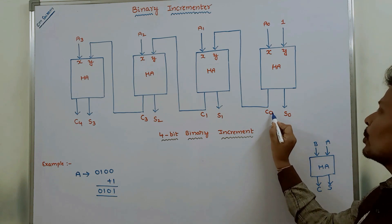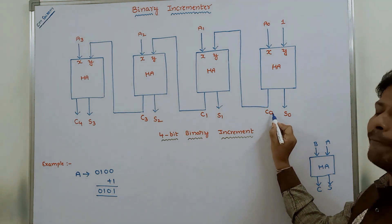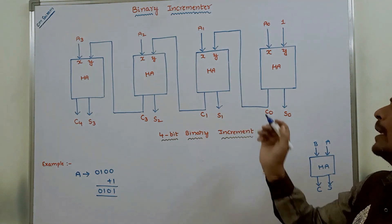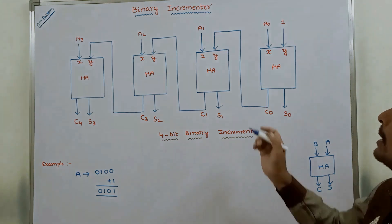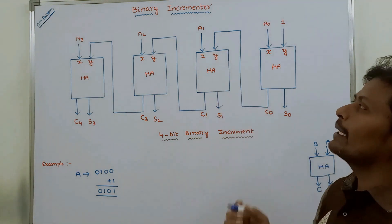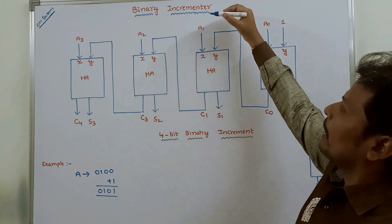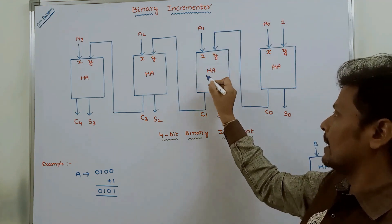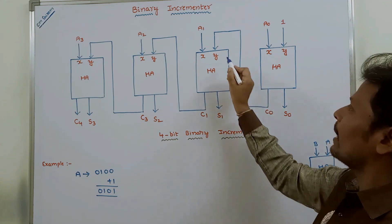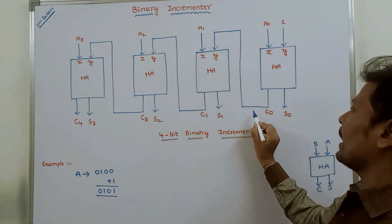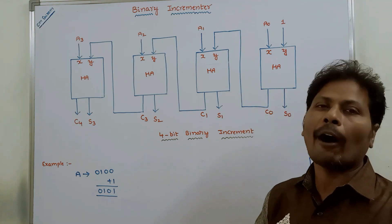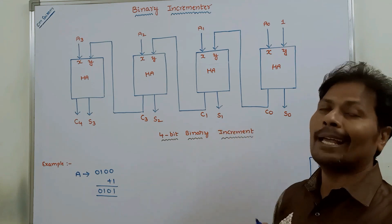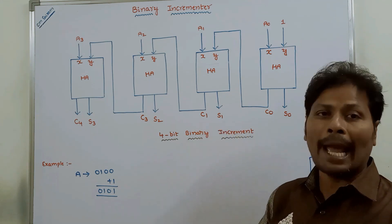The carry output C0 of the least significant half adder can be given as one input of the next higher half adder. That half adder can take two inputs: A1 is applied at the X input, and the carry output from the previous half adder at the Y input. It can produce two outputs: S1 and a carry output.